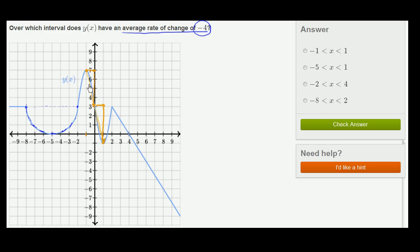So the average rate of change over this interval is negative 4. So we don't even have to look at anything else, that one will work.